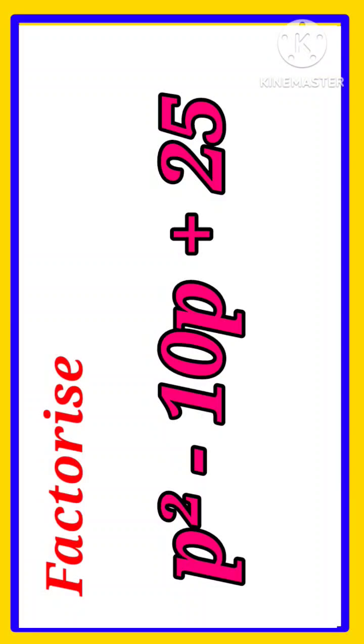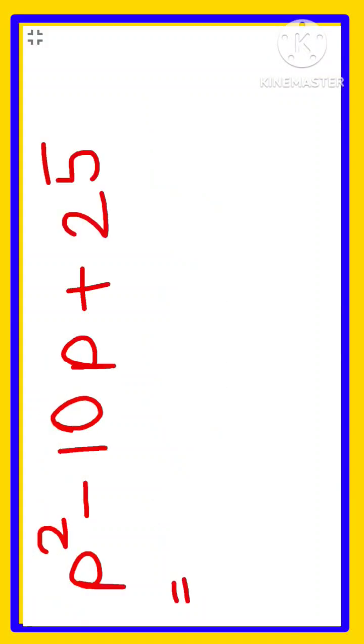So here it is given p squared minus 10p plus 25. As per previous day's discussion, can we write this minus 10 as the sum of two numbers, and if we multiply those two numbers can we get this constant 25? Let us see.